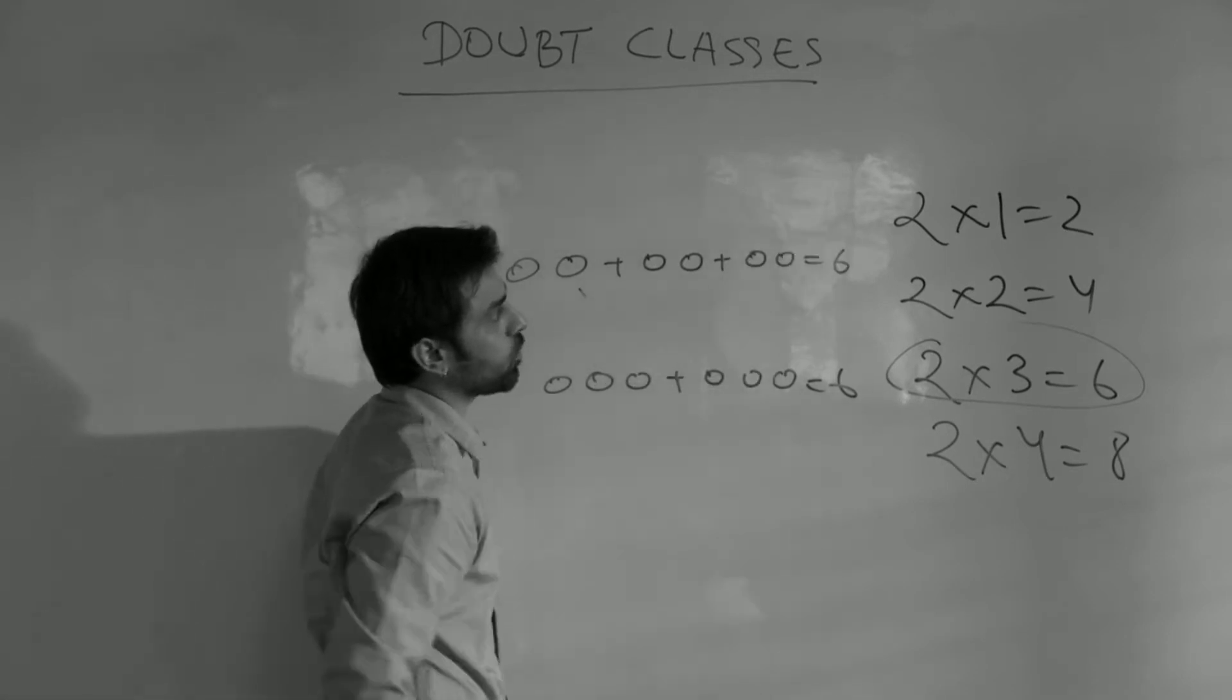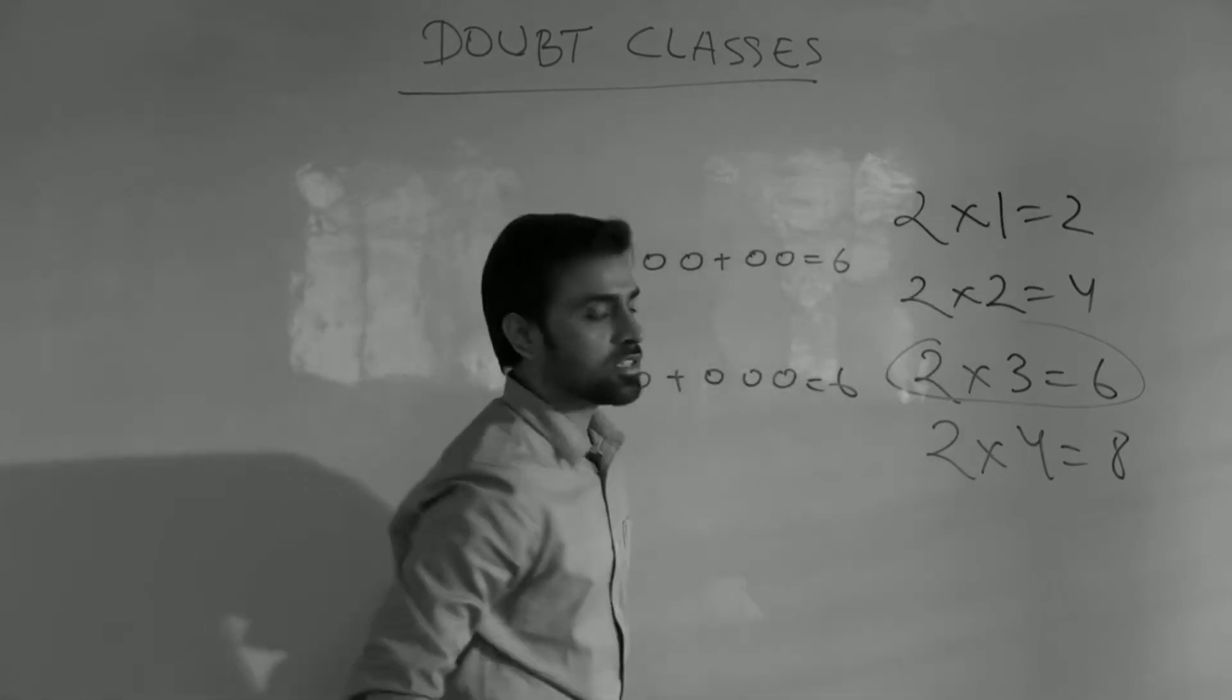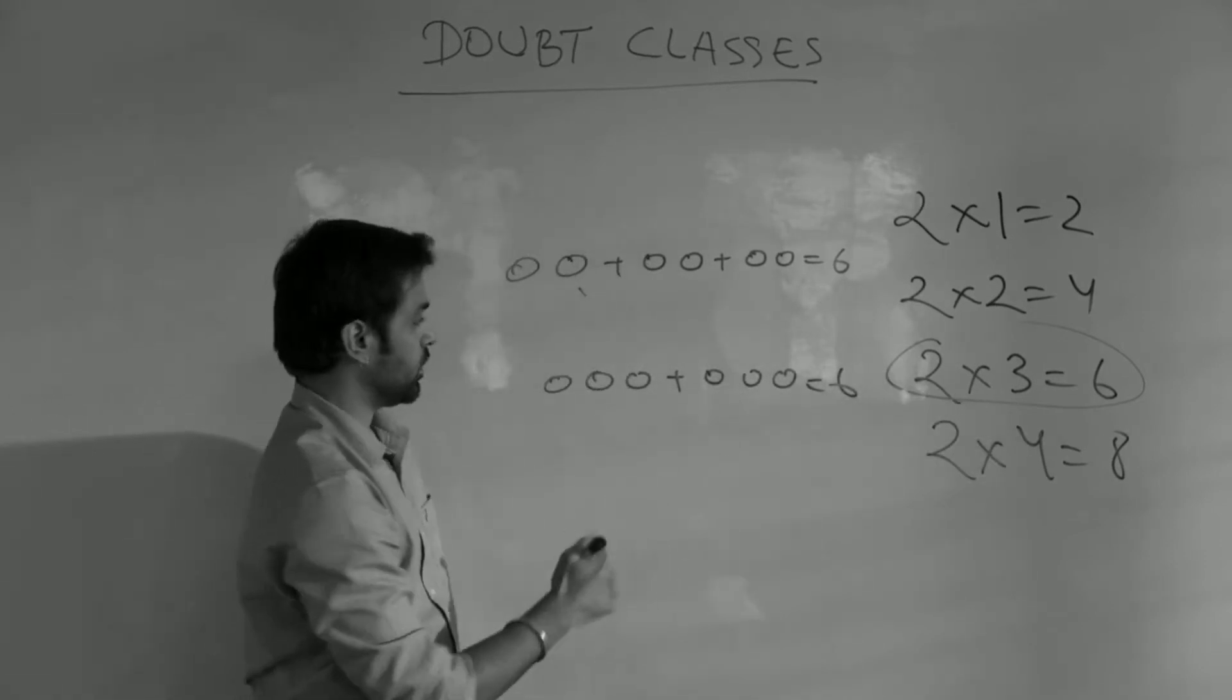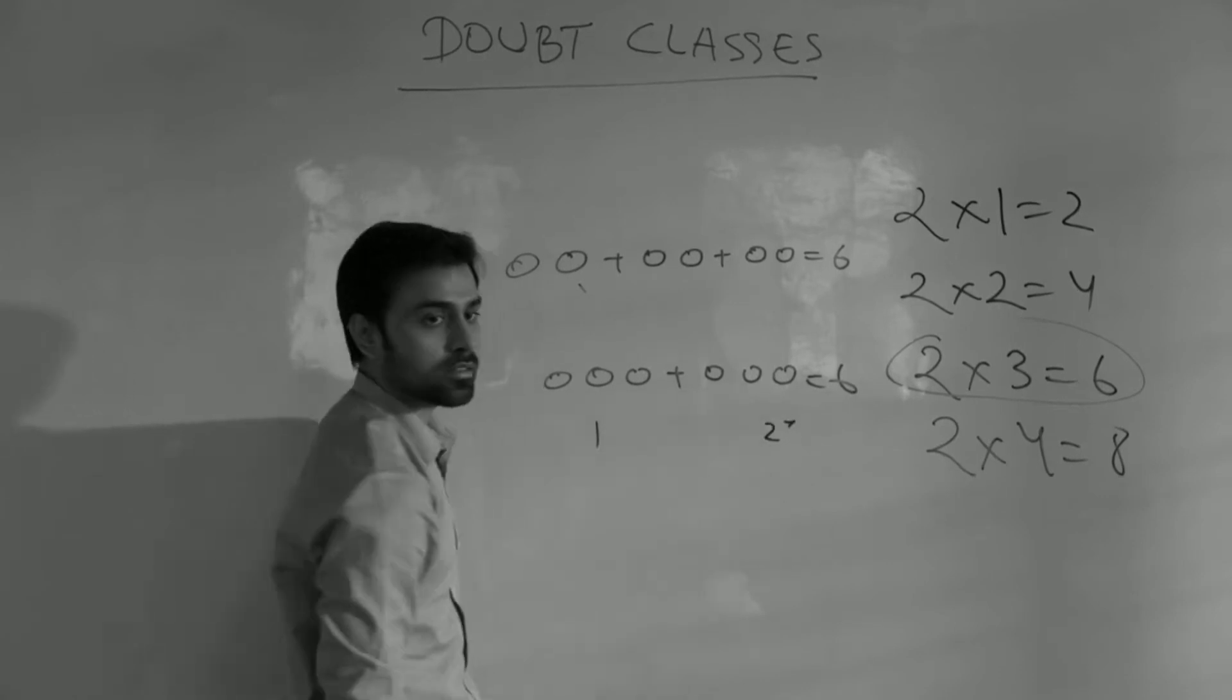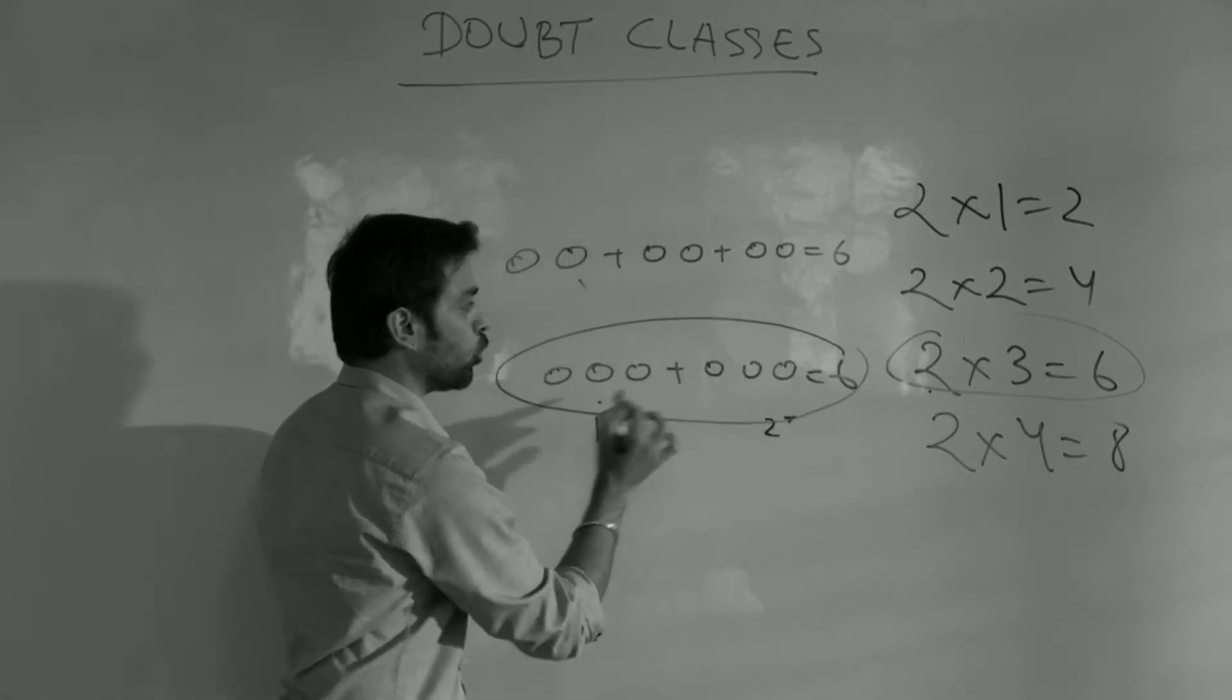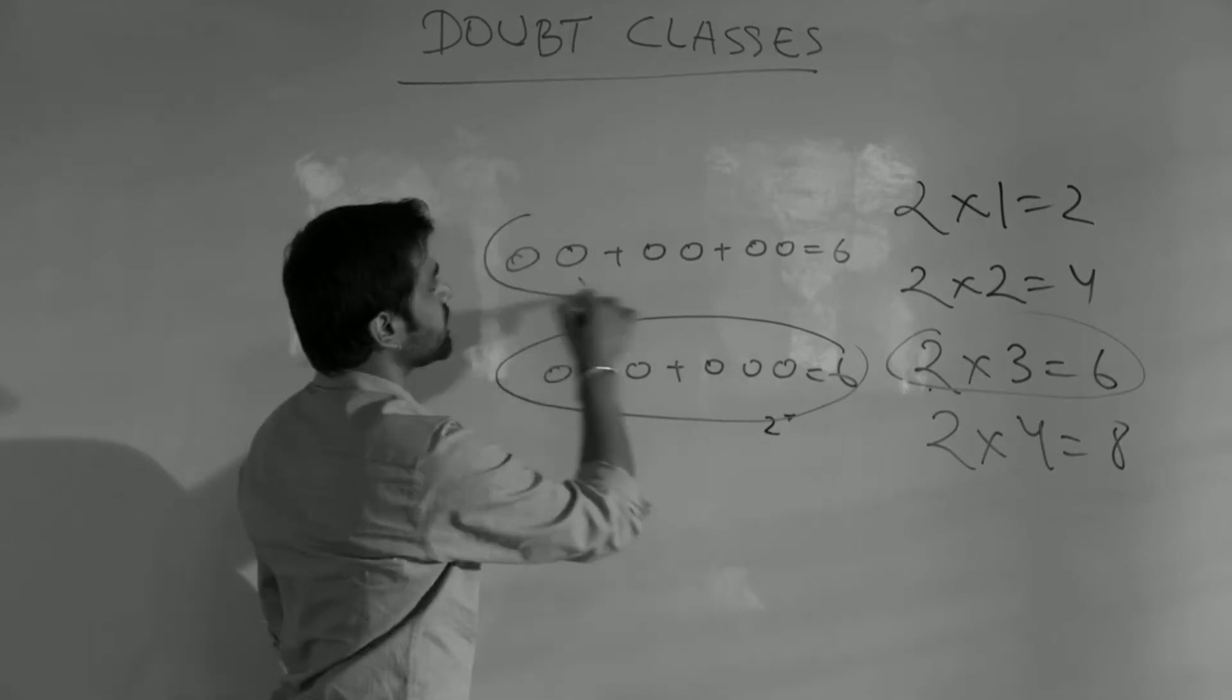Ab ik bar bol ke batao sab log. Kya padhta hai isko? Two ones is two. Two twos are four. Two threes are six. First third ye ho ga ya? Second third ye ho ga ya? Hum likhte ye hai. Bolte ye hai. Two threes are six. Samaj rahe hai?